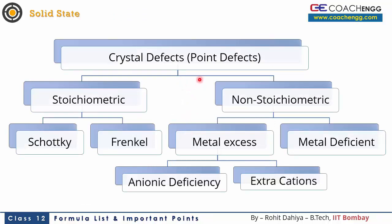Now let's discuss defects. In this course, only point defects are covered. There are 2 types: stoichiometric and non-stoichiometric. In stoichiometric defects, the stoichiometry of the compound is maintained — the ratio of constituents stays the same, e.g., equal Na⁺ and Cl⁻. In non-stoichiometric defects, the stoichiometry of the compound changes. Within stoichiometric defects, there are two types: vacancy defects (like Schottky defect, where equal numbers of anions and cations are missing) and interstitial defects.